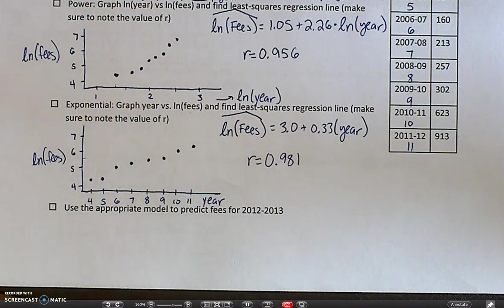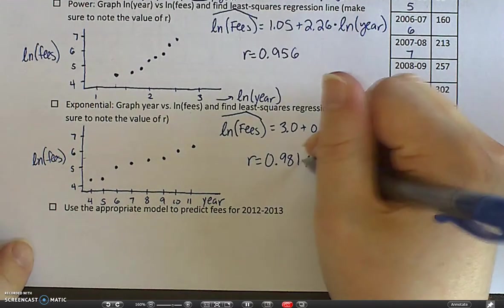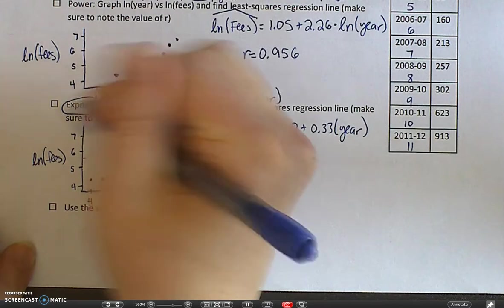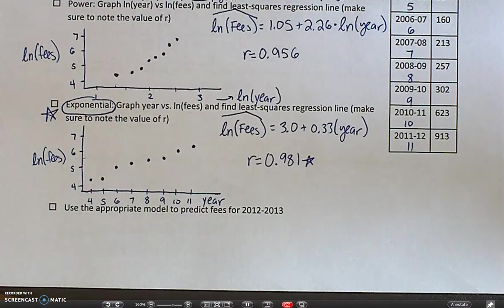But this one is going to be slightly bigger, which tells me that exponential is the better fit. Exponential is going to be the better fit compared to the power model. So the exponential model is the one we want to go with.